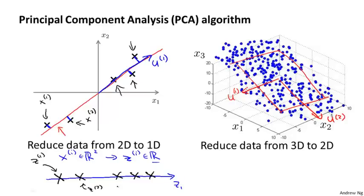What PCA has to do is come up with a way to compute two things: one is to compute these vectors u1, and in this case u1 and u2, and the other is how do we compute these numbers z?